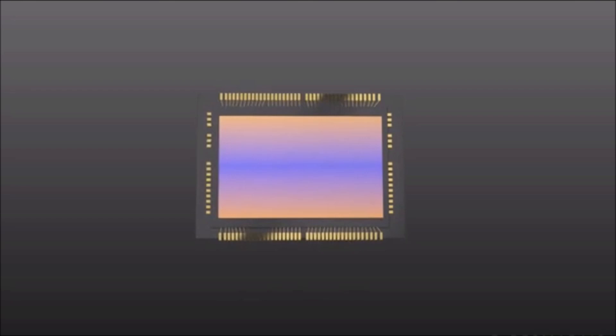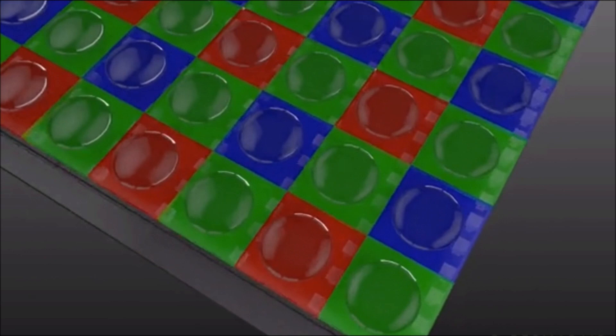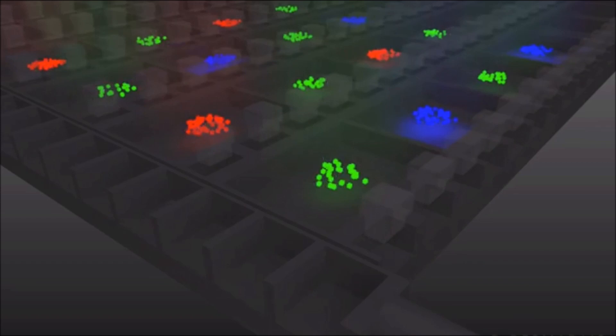Because this digital conversion happens outside of the sensor, a high-quality 16-bit analog-to-digital converter, or ADC, can be used. Every pixel is also converted using the same amplifier, which gives excellent pixel-to-pixel reproducibility.